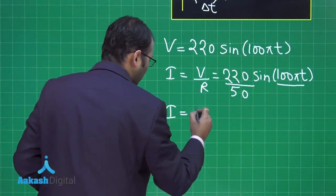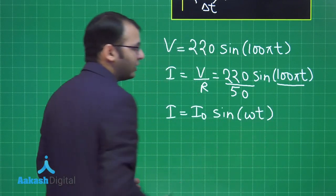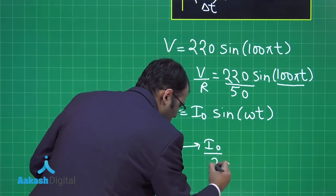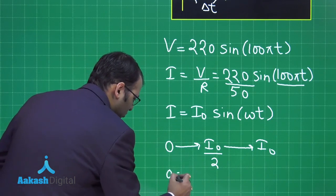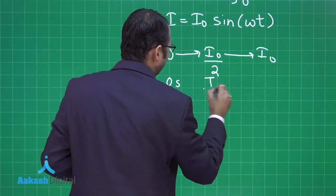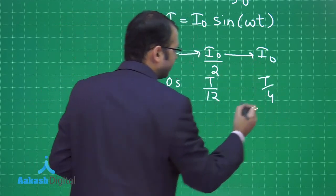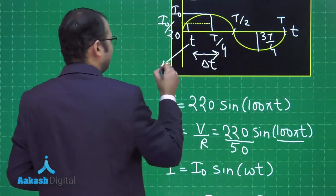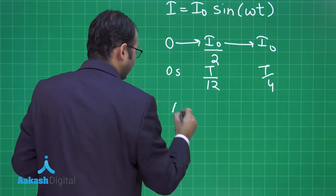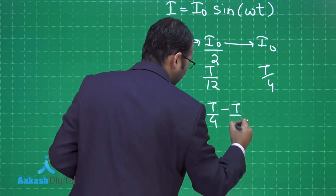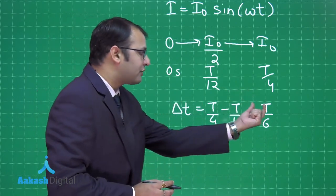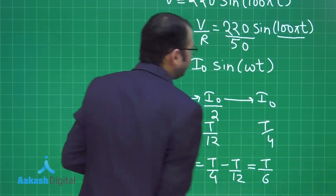For a sinusoidal curve, current reaches I₀/2 at time T/12 and reaches I₀ at T/4. Therefore, the time difference Δt = T/4 − T/12. Solving: Δt = 3T/12 − T/12 = 2T/12 = T/6. Now we need the value of the period T to compute the final answer.